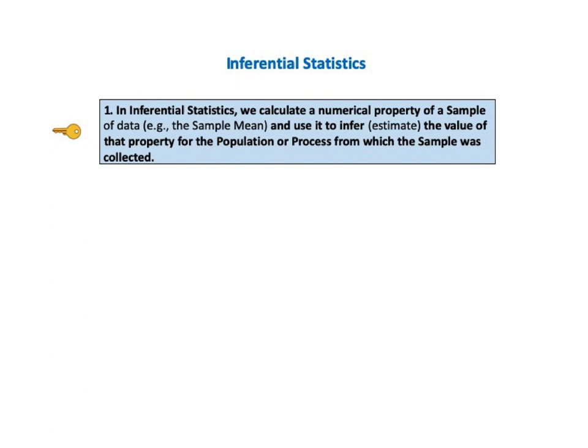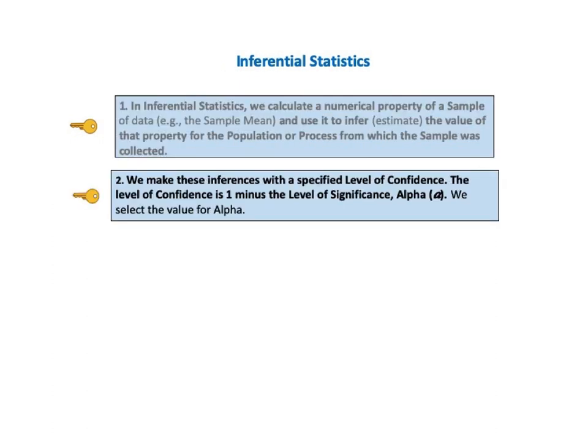The first key says: in inferential statistics, we calculate a numerical property of a sample of data — for example, the sample mean — and we use it to infer, that is to estimate, the value of that property for the population or process from which the sample was collected. KTU number 2 says: we make these inferences with a specified level of confidence. The level of confidence is 1 minus the level of significance, which is alpha. We select the value for alpha.